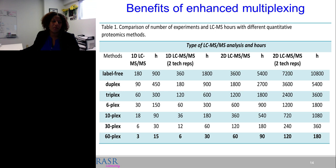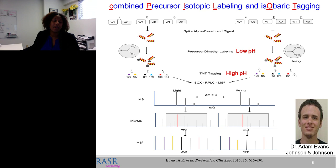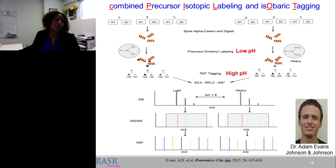Our group developed an approach called Combined Precursor Isotopic Labeling and Isobaric Tagging, or CPALIT. Dr. Adam Evans, a former lab alum, developed this method in which we take six pairs of wild-type and diseased animals, split into groups of three. We take liver tissue from each animal, harvest it, extract proteins, and generate a tryptic digest. We can spike in exogenous standards like alpha-casein for normalization.